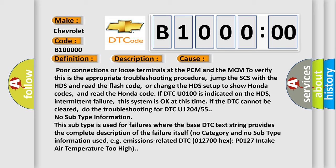If DTC U0100000 is indicated on the HDS, intermittent failure, this system is okay at this time. If the DTC cannot be cleared, do the troubleshooting for DTC U1204 or 55.